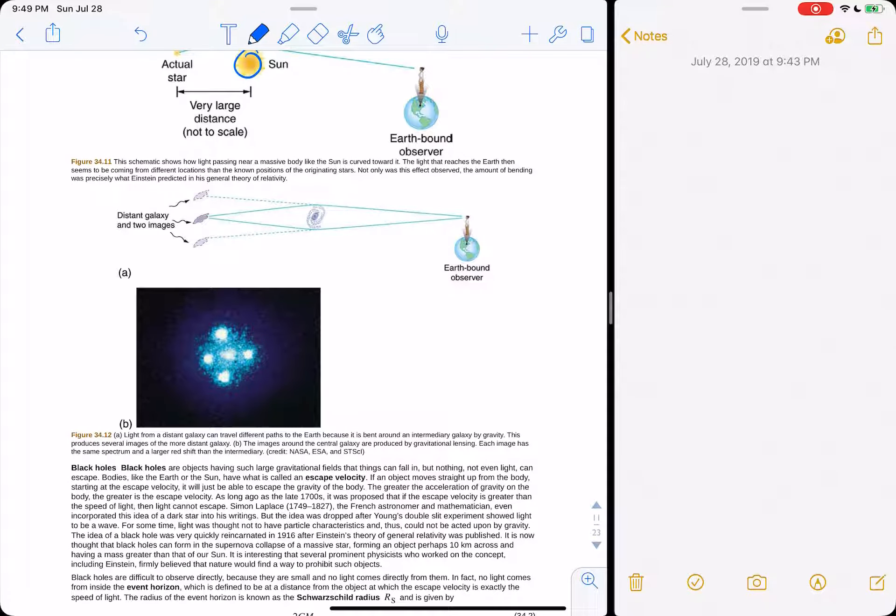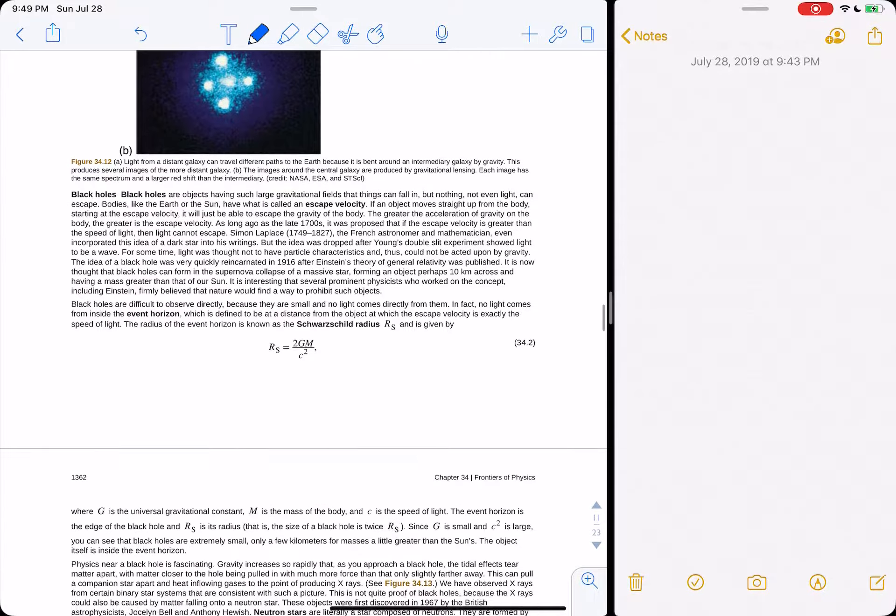This is called Einstein's Cross. There's a dense object, there's a star behind it, and we're seeing four copies of the same star because of this gravitational lensing effect, because gravity is warping the light path, and light is following the curved path.